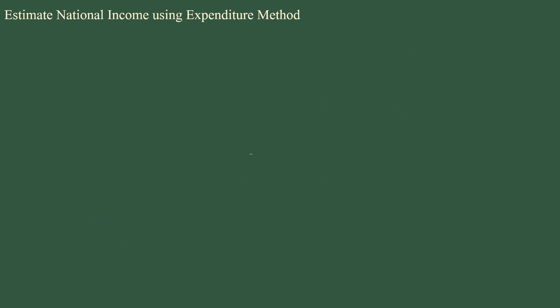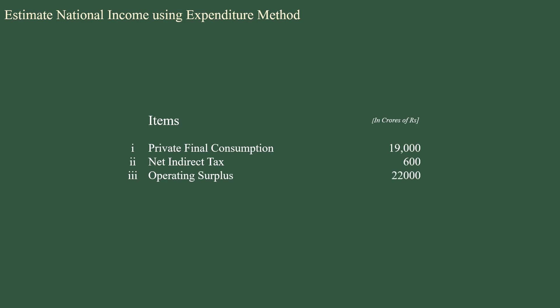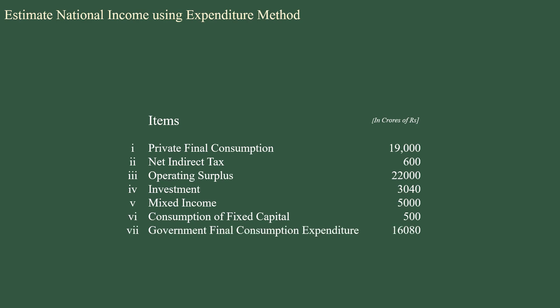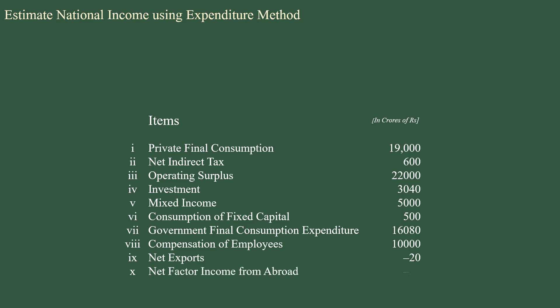Estimate National Income using Expenditure Method. The given items are: Private Final Consumption – 19,000 crores; Net Indirect Tax – 600 crores; Operating Surplus – 22,000 crores; Investment – 3,040 crores; Mixed Income – 5,000 crores; Consumption of Fixed Capital – 500 crores; Government Final Consumption Expenditure – 16,080 crores; Compensation of Employees – 10,000 crores; Net Exports – 20 crores; Net Factor Income from Abroad – 30 crores.